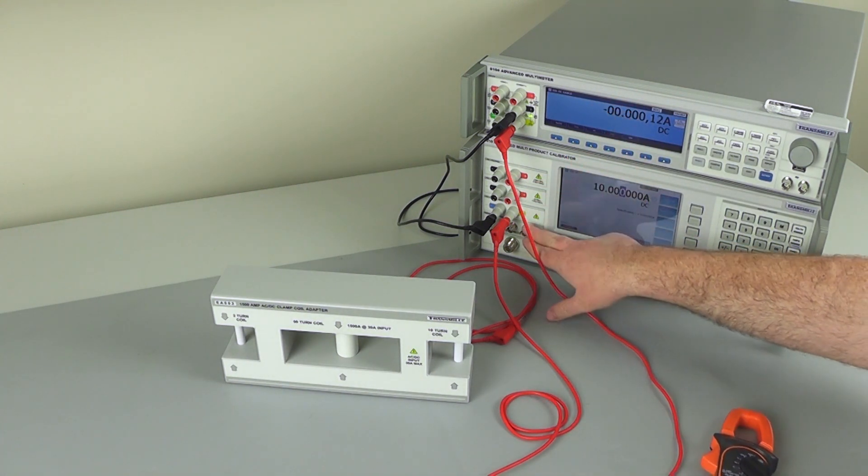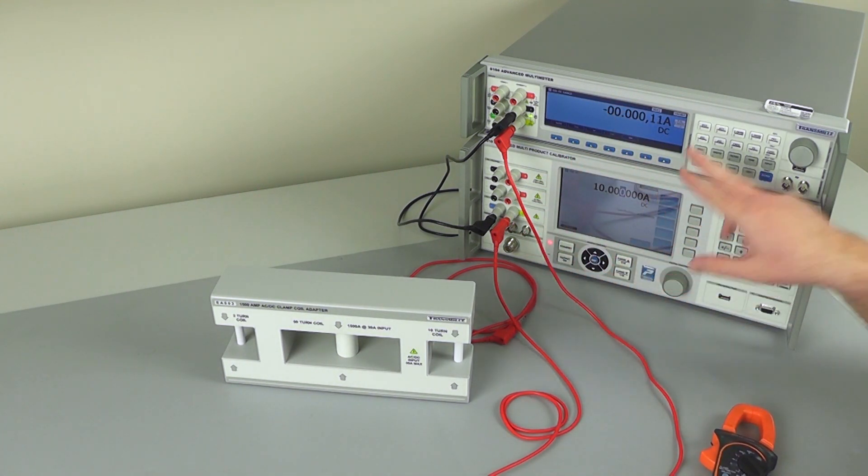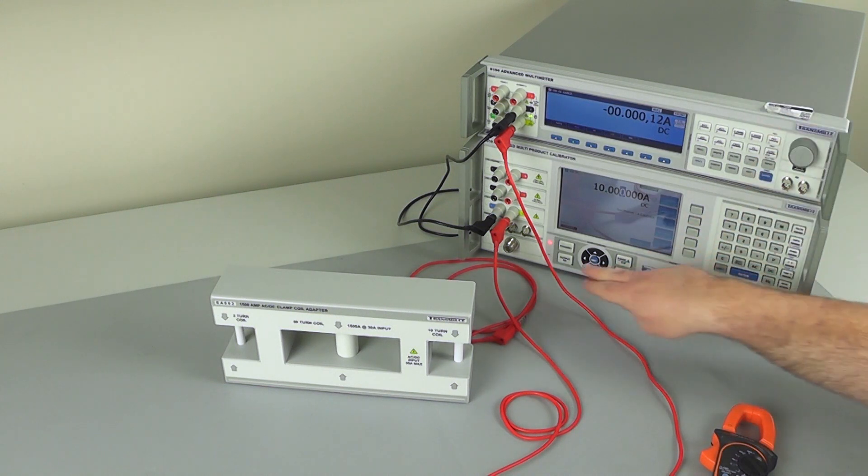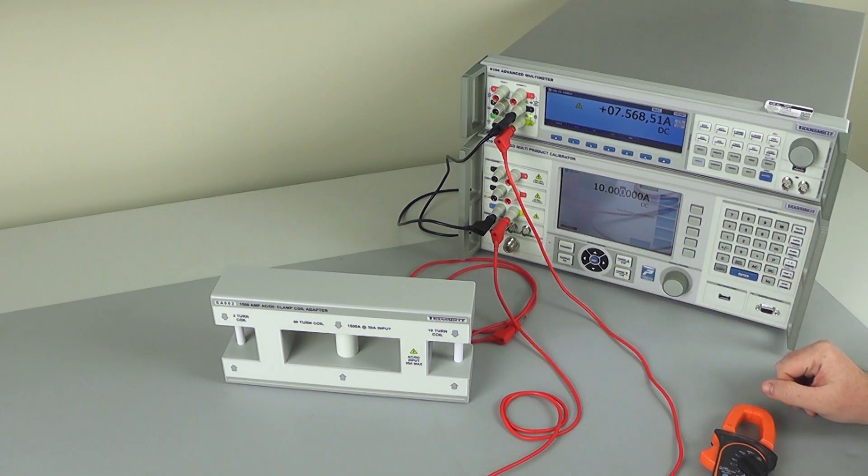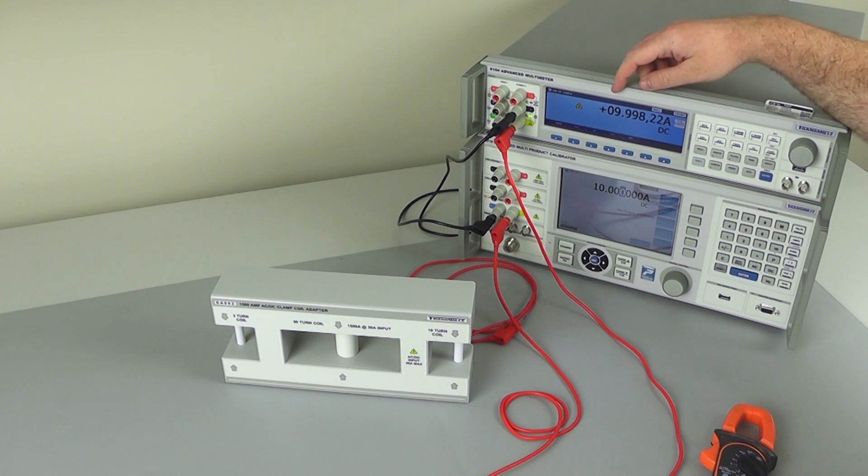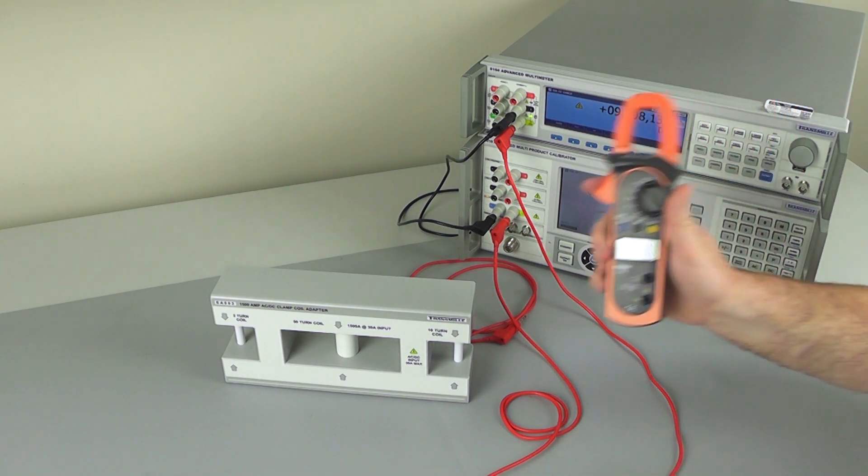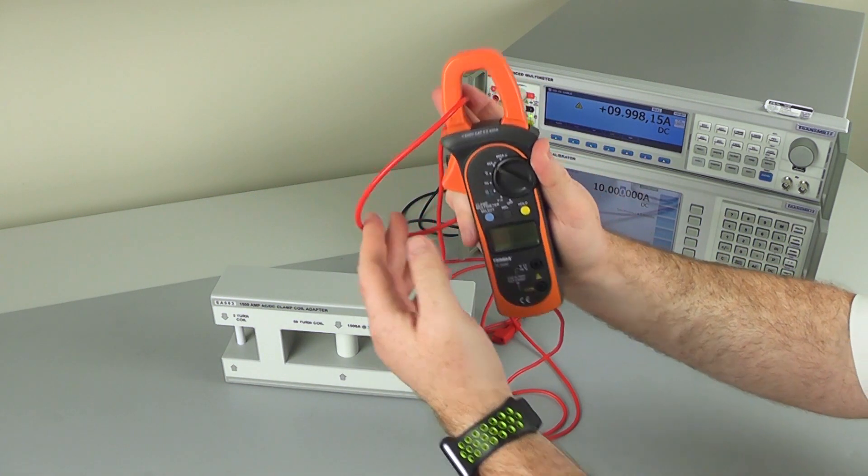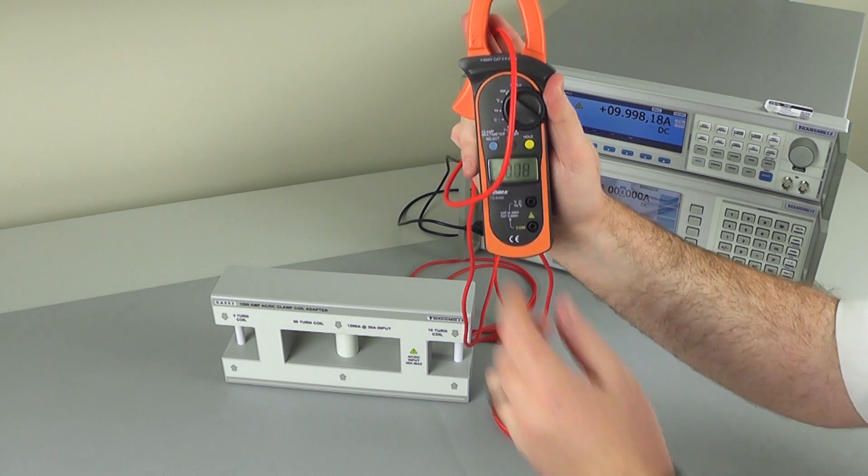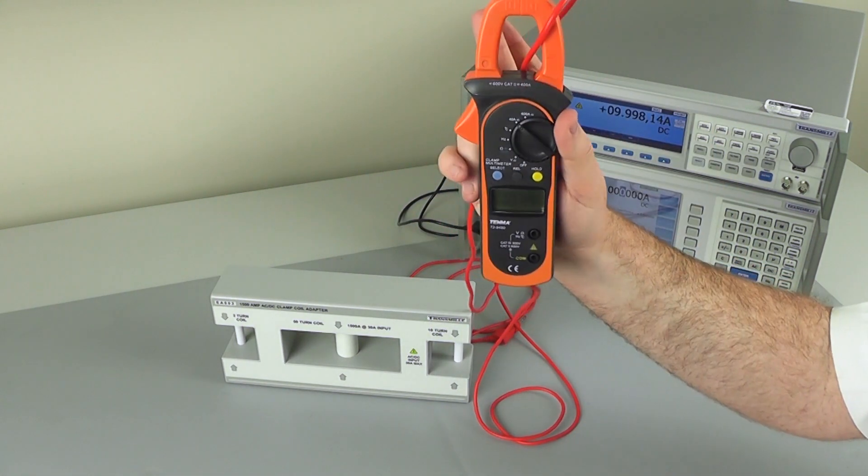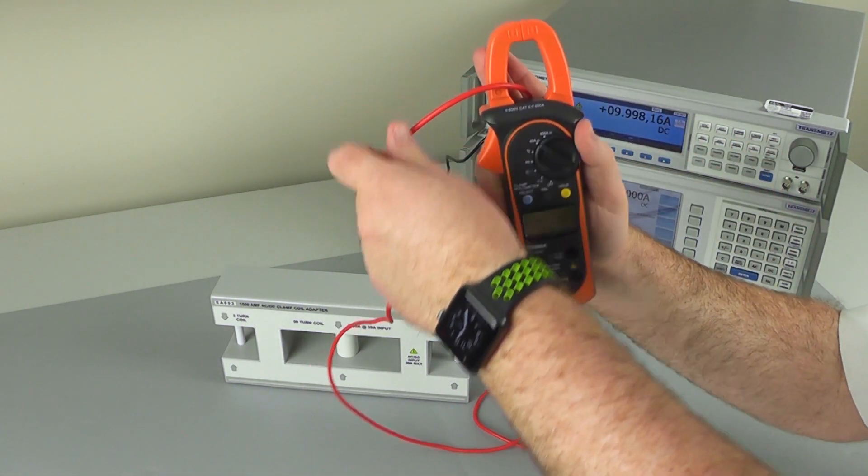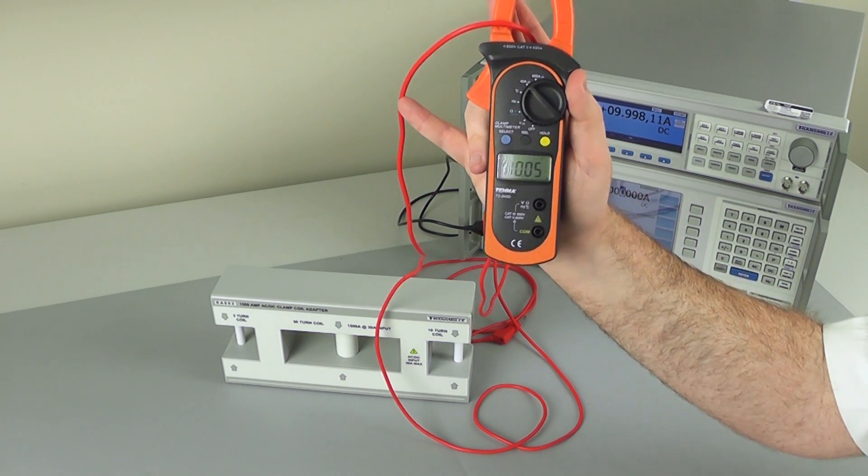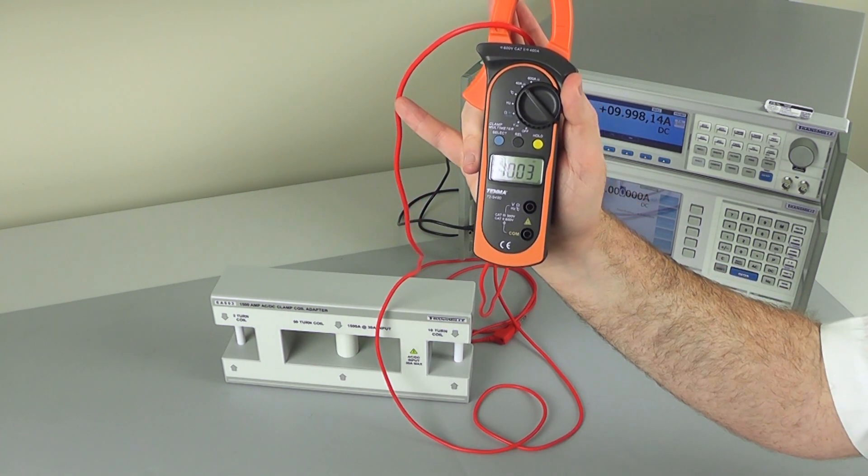So here I have set the 10 amp range on my multiproduct calibrator and my multimeter. I turn the output on. We can see we are measuring 10 amps. With my clamp meter, I pass the single conductor through. And we can see we are measuring 10 amps on the single conductor with this clamp meter.